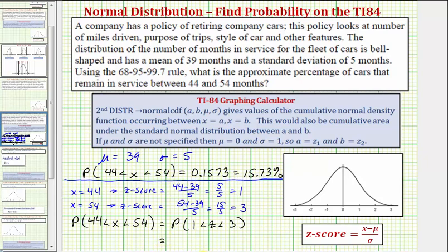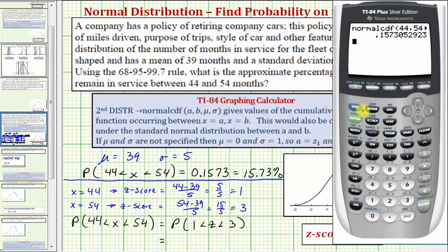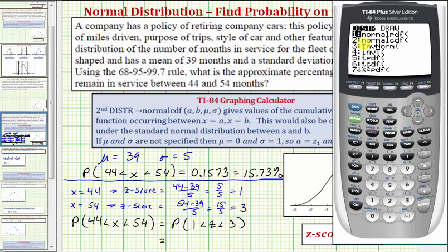So going back to the calculator, once again we'll press second vars for distribution, option two. And now for the lower value here, it's going to be the lower z-score of one, enter. The upper value is going to be the z-score of three, enter.